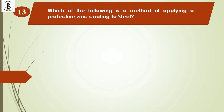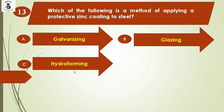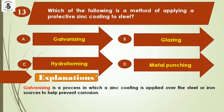Question 13: Which of the following is a method of applying a protective zinc coating to steel? Option A: galvanizing, Option B: glazing, Option C: hydroforming, Option D: metal punching. Galvanizing is the famous process in which a zinc coating is applied over steel or iron to help prevent corrosion. The right answer is Option A, galvanizing.